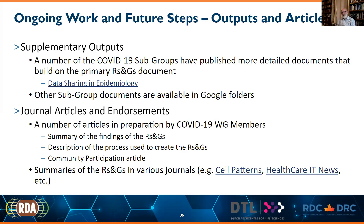There is a separate data sharing and epidemiology output. Some subgroups also made the Google folders they used during their working process available — including notes from their calls and in some cases unfinalized or unpublished versions of more detailed documents. So that's one kind of supplementary output. There's also a set of journal articles being prepared: one is a summary of the findings, and another is a description of the process used to create the recommendations and guidelines, covering the social-technical community aspect of the process.